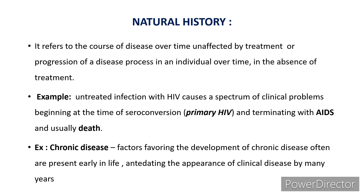For example, untreated infection with HIV causes a spectrum of clinical problems beginning at the time of seroconversion, i.e. primary HIV, and terminating with AIDS and usually death. Another example is chronic disease: factors favoring the development of chronic disease are often present early in life, antedating the appearance of clinical disease by many years — for example, smoking that might lead to cancer.